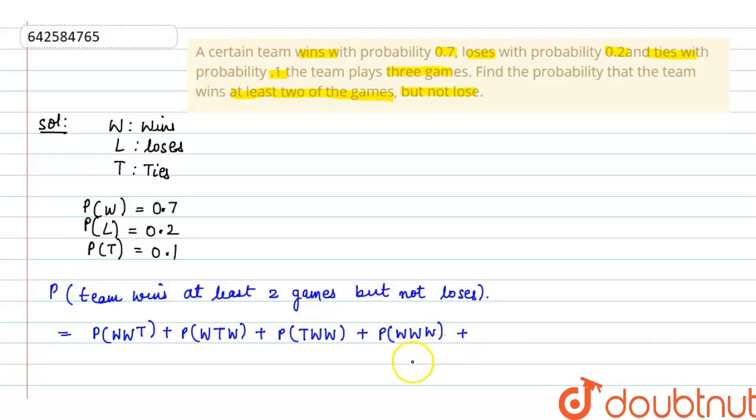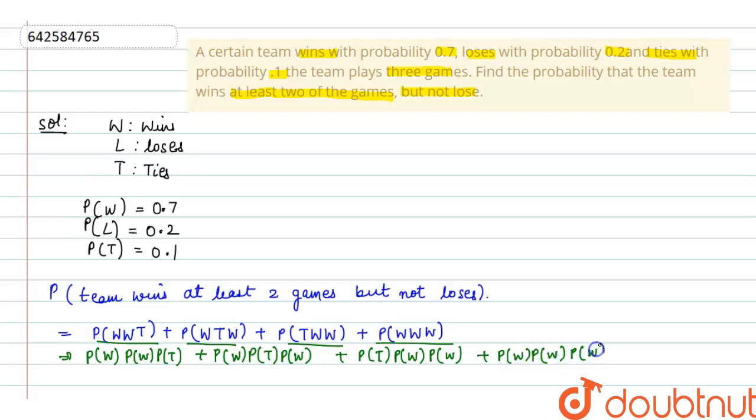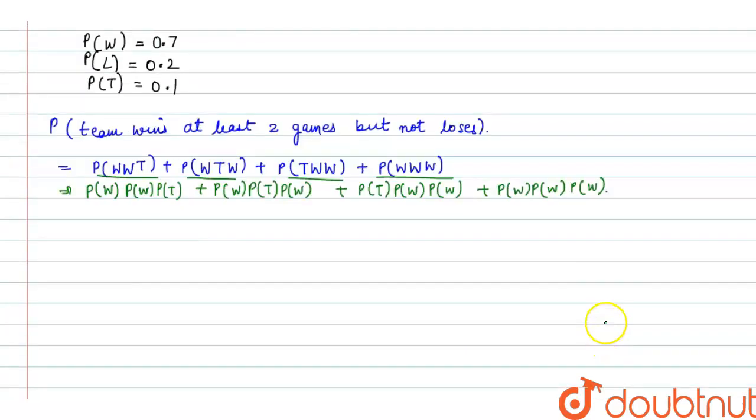Sorry not plus. Now, we can write it as probability of winning, probability of winning, probability of tie for the first case. For second case, probability of win, probability of tie, probability of win. For the third case, probability of tie, probability of win, probability of win. And for the fourth case, probability of win, probability of win, and probability of win.